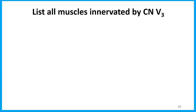For this question, please pause. List all muscles innervated by V3 — write down as many as you can think of, and also write down the name of the branch that supplies each one. When you're ready, check back in and we'll talk through all of them.